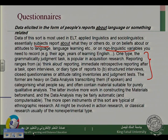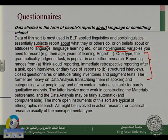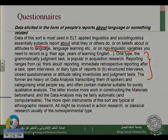This closed questionnaire or attitude rating is like a questionnaire or judgment test — the normal test you give to your students to judge whether they are at a particular level of language or not. The former tools are heavy on data analysis, transcribing them if spoken. If you have interviews and think-aloud, it is very difficult because it generates a lot of data. You listen to them and then write them, sometimes translating from Arabic into English, and categorizing what people say. These often contain material suitable for purely qualitative analysis.